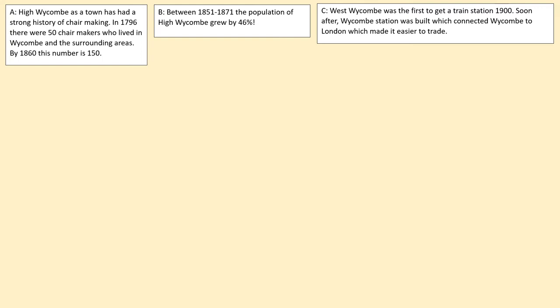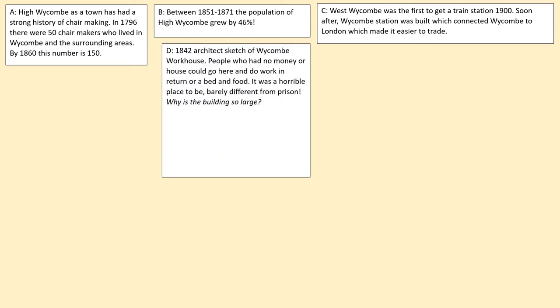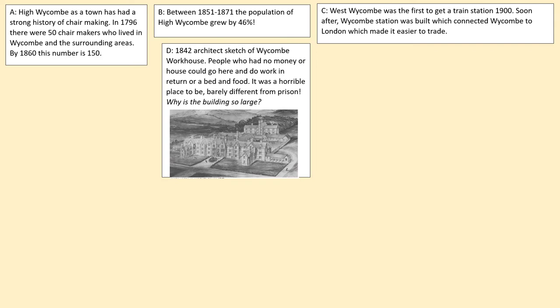Source C: West Wycombe was the first to get a train station in 1900. Soon after, Wycombe station was built, which connected Wycombe to London and made it easier to trade — you could sell your chairs in London very easily. Source D: This is an artist's sketch of Wycombe Workhouse, where people with no money or house could go and do work in return for a bed and food.